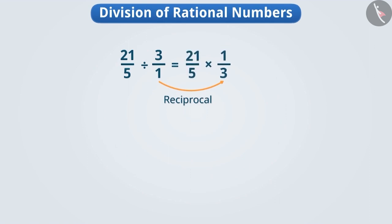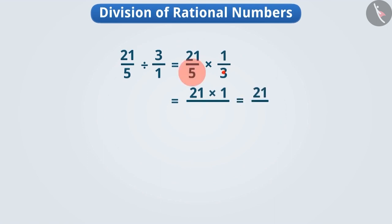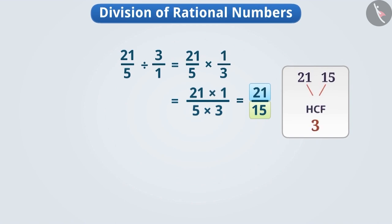We will multiply twenty-one by five and one by three. We multiply the numerators: twenty-one into one is equal to twenty-one. Then we multiply the denominators: five into three is equal to fifteen. The result is expressed as twenty-one divided by fifteen. Since the HCF of twenty-one and fifteen is three, we divide both by three to get the result seven by five.